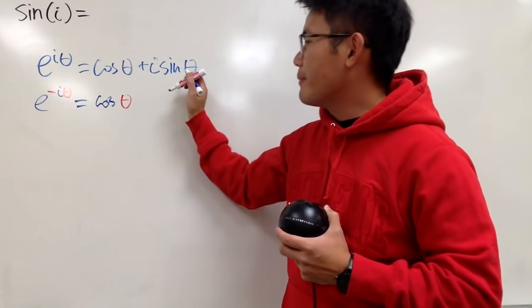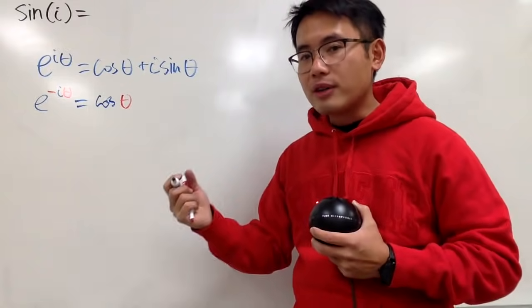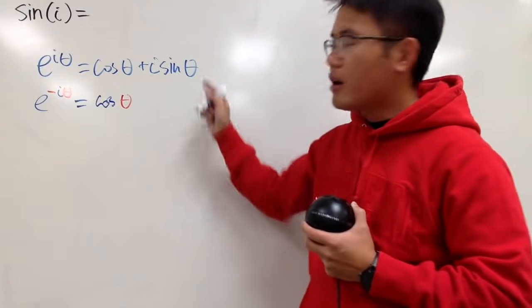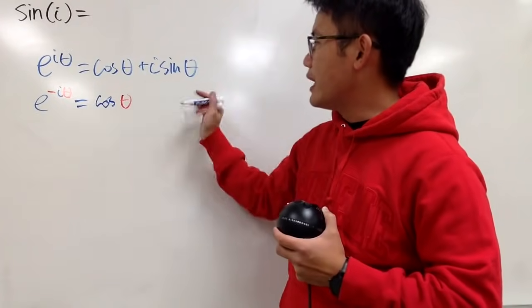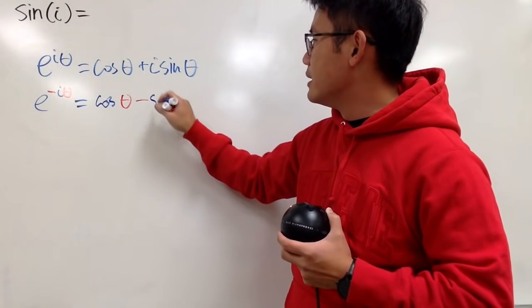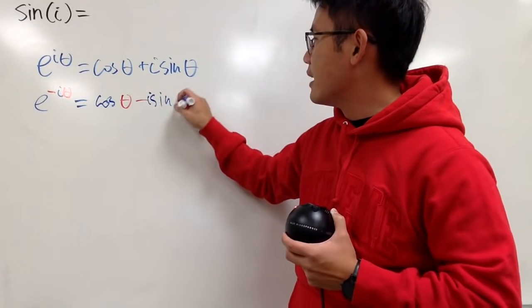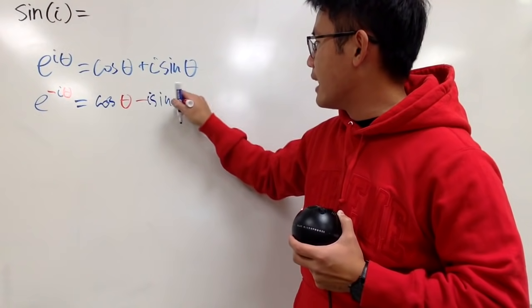Similarly, sine theta, because sine is an odd function, when you plug in negative theta in here, you can take that negative out. So you get negative i sine theta, like that.